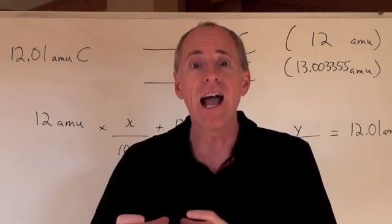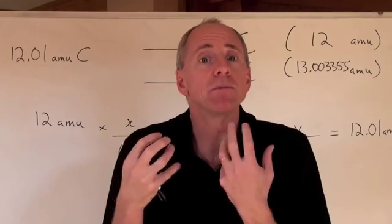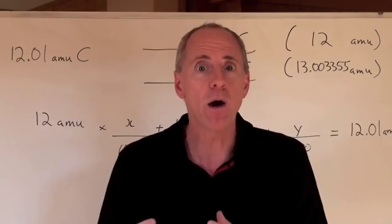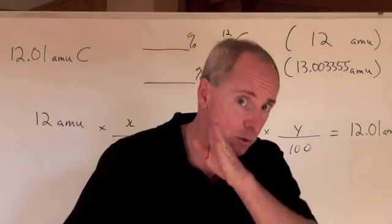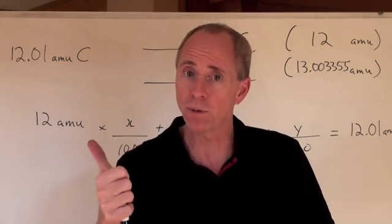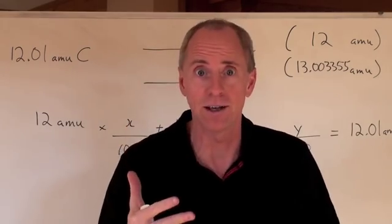Then the sample gets ionized, which means electrons are stripped off of it and it becomes a charged particle. Now what you do with a charged particle is excite it in an electrical field to make it really move fast. So you vaporize it, then you ionize it, and then you accelerate it.